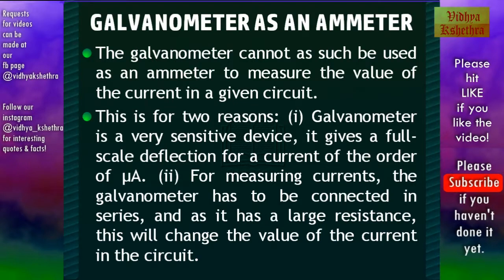That is, the galvanometer is a very sensitive device and it gives a full scale deflection for a current of the order of microampere. Then the second reason is for measuring currents the galvanometer has to be connected in series and as it has a large resistance this will change the value of the current in the circuit.